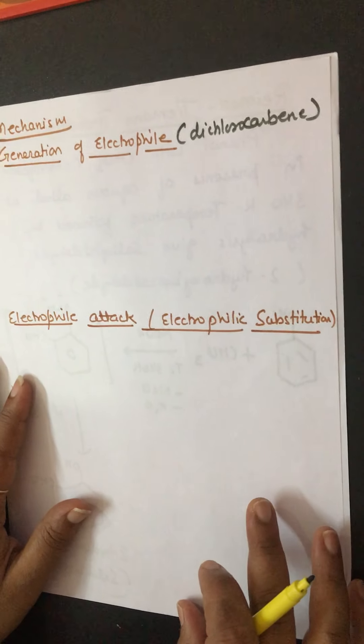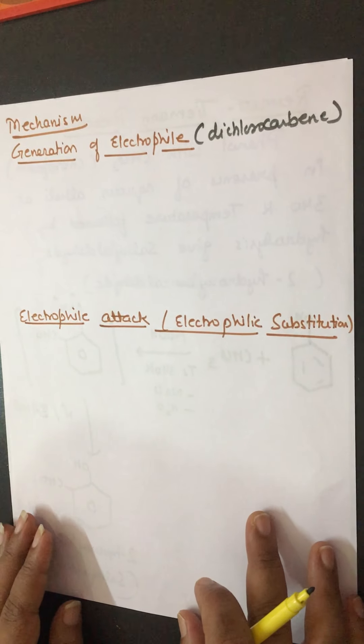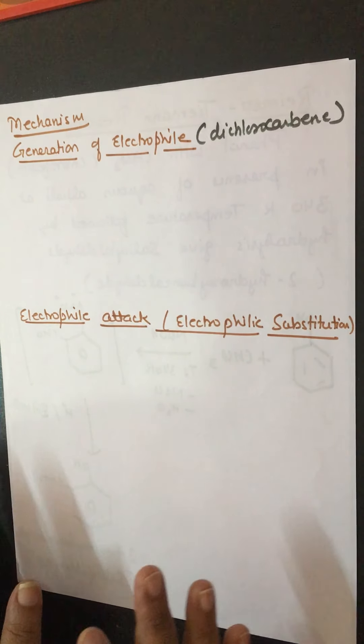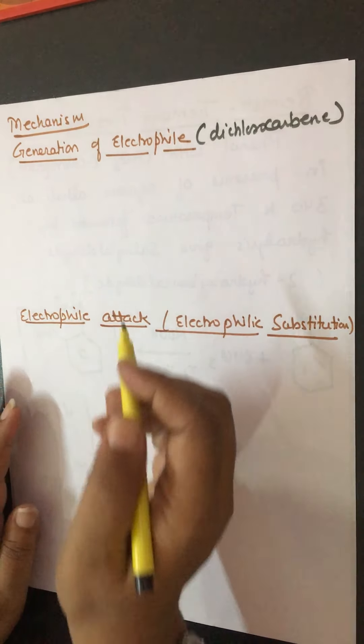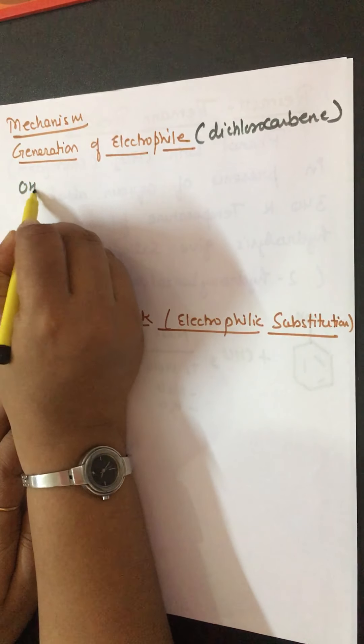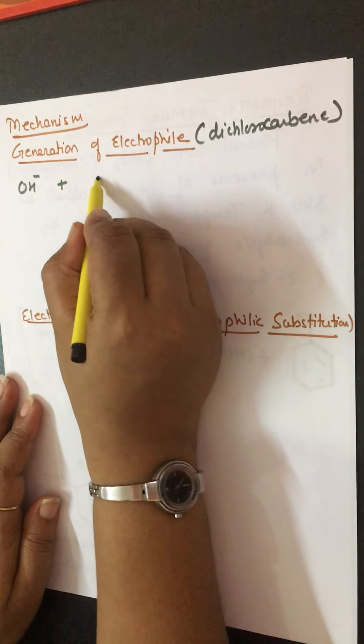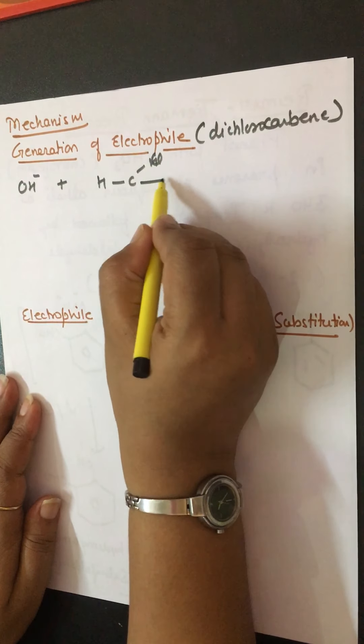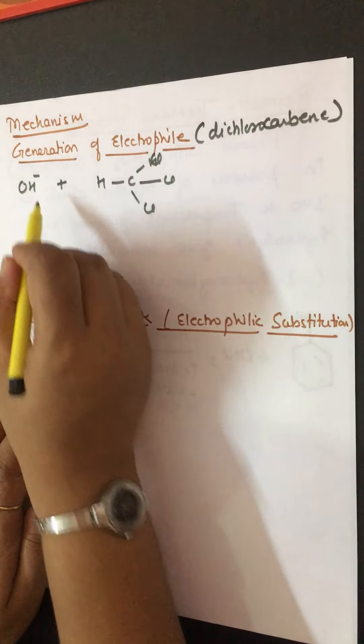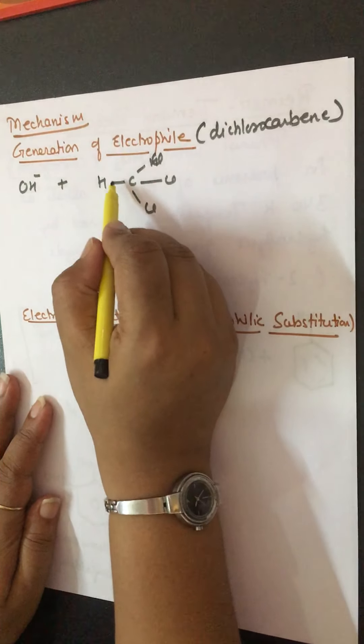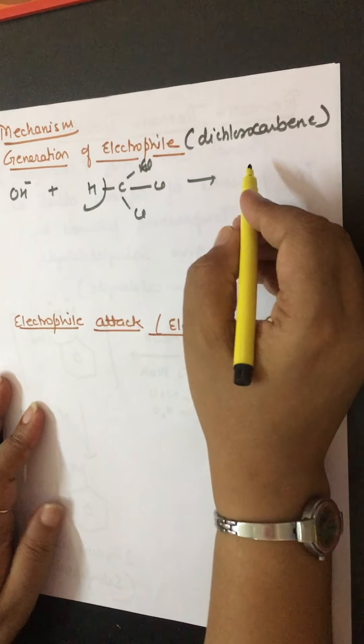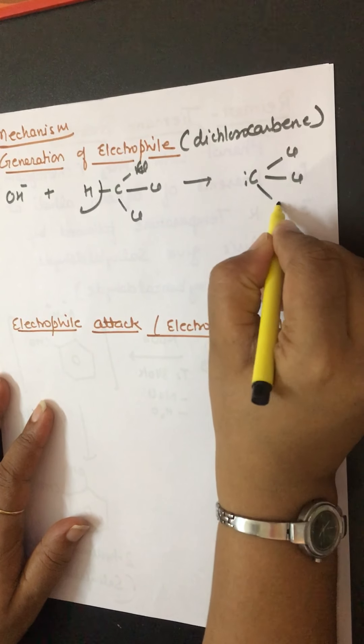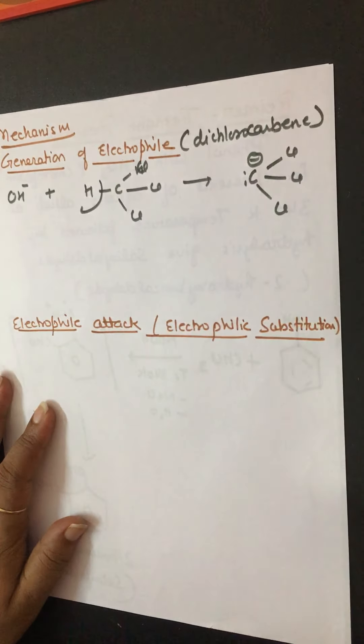You have studied about carbocation, carbanion, and free radicals. In this case, dichlorocarbene is the electrophile. How is it generated? Look at this. In presence of alkali, the structure of chloroform CHCl3 reacts with OH- which will abstract H+, and it gives out CCl3- like this.